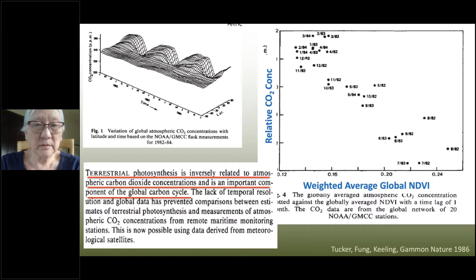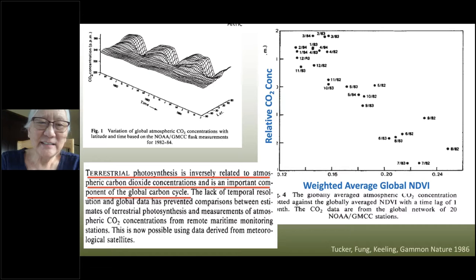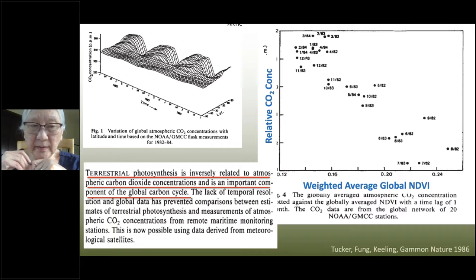The paper starts with this sentence: 'Terrestrial photosynthesis is inversely proportional to atmospheric carbon dioxide concentrations, and is an important component of the global carbon cycle.' Graham Farquhar cannot get past that sentence, because from the biological view, photosynthesis would increase with carbon dioxide — not be inversely proportional. So we're talking about the atmospheric view versus the biological view. When we get together from different disciplines, the sign convention is something we need to work through.